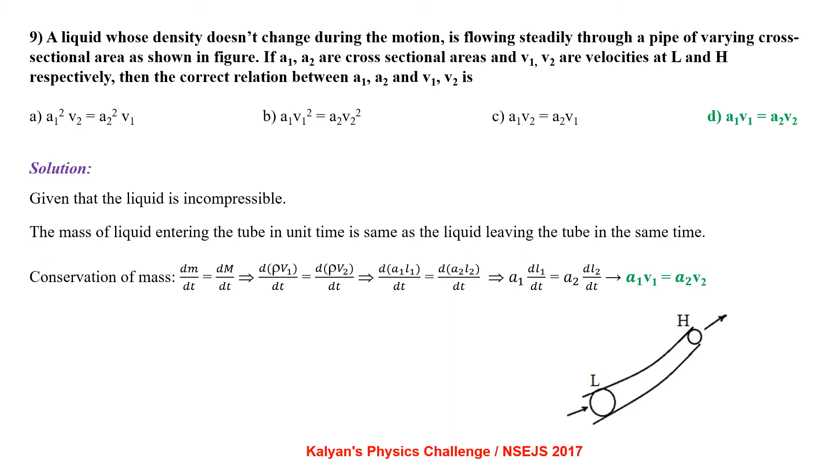A liquid whose density does not change during the motion is flowing steadily through a pipe of varying cross sectional area as shown in figure. If A1 and A2 are cross sectional areas and V1 and V2 are velocities at L and H respectively, then the correct relation between A1 and V1 and V2 is. Given the liquid is incompressible, the mass of the liquid entering the tube in unit time is same as the mass of the liquid leaving the tube in the same time.